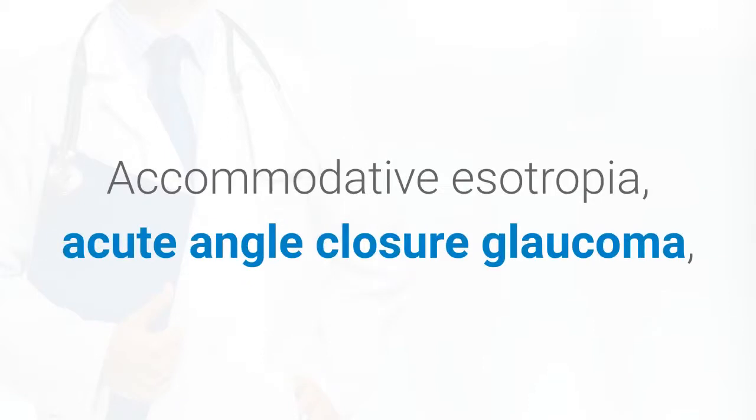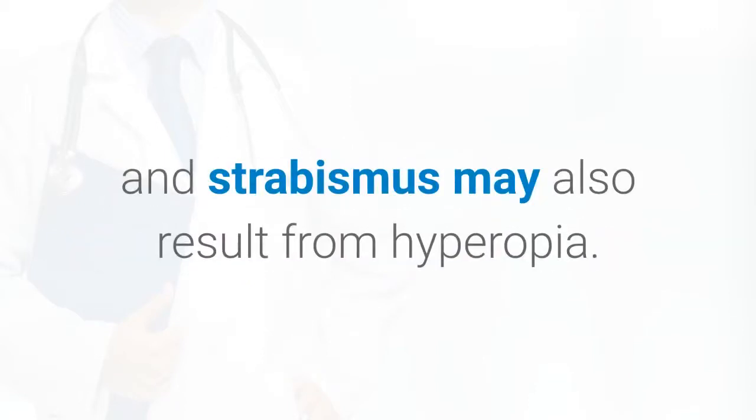Levels greater than 1.00 diopters of hyperopic anisometropia and 5.00 diopters of isometric hyperopia are considered amblyogenic. Accommodative esotropia, acute angle closure glaucoma, and strabismus may also result from hyperopia.